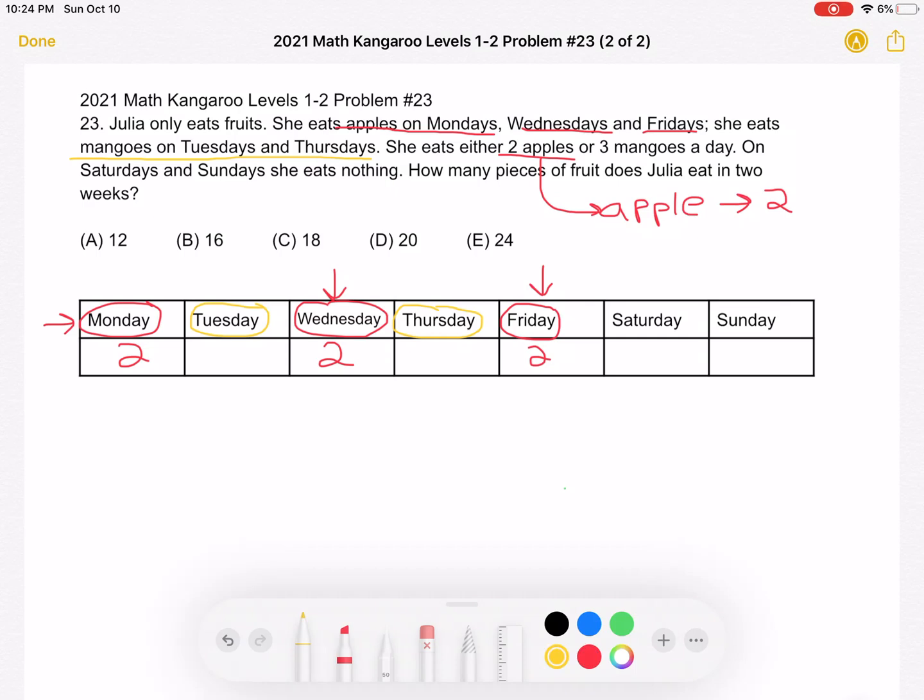Or three mangoes. So if it's a mango day, she will eat three of them. Tuesday is a mango day, so she'll be eating three mangoes. And on Thursday, she'll be eating three mangoes.